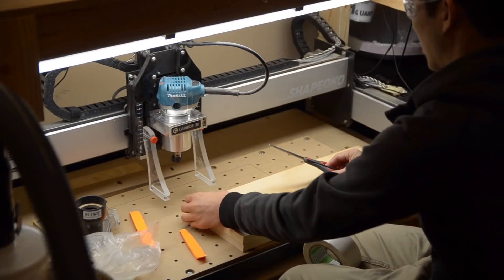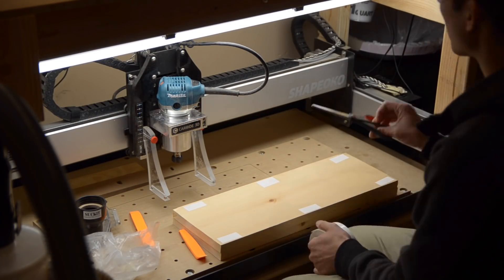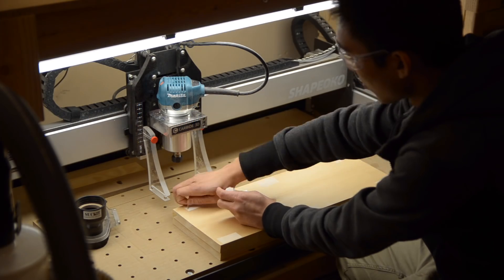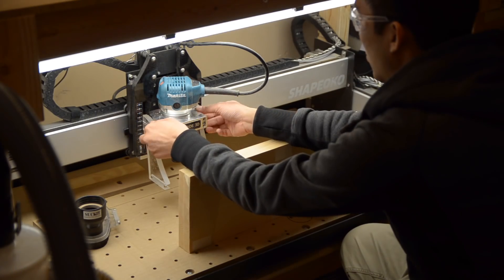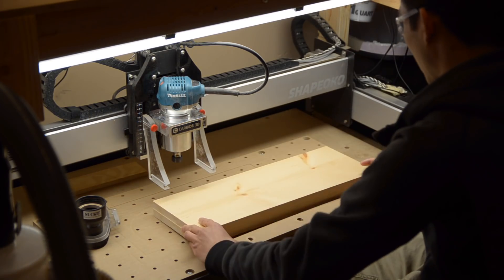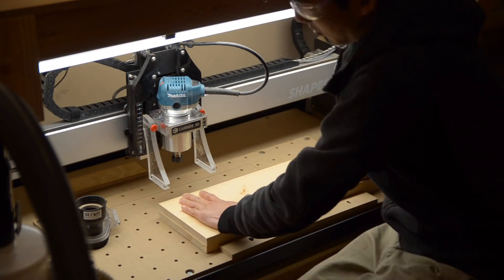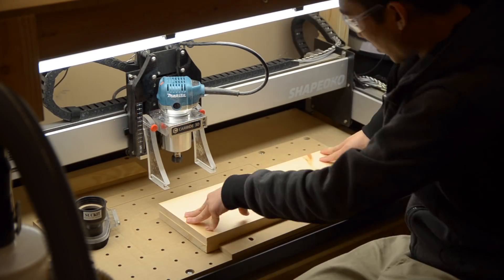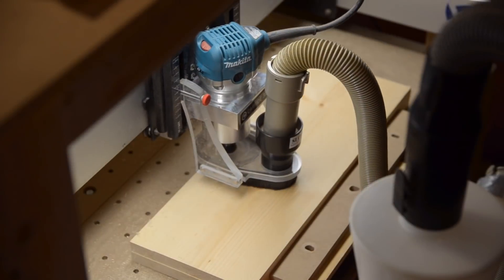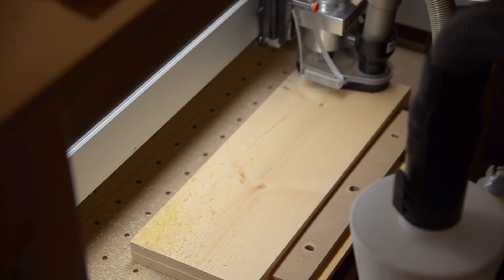I used double sided tape to hold my board to my Shapeoko for two reasons. One, I needed complete access to the top surface of my wood so I could flatten it, and two, using clamps could unbow my wood. If I faced it in that state, the bow in my board could spring back after I release the clamps. You want to flatten your boards in their natural state with as little internal strain as possible.